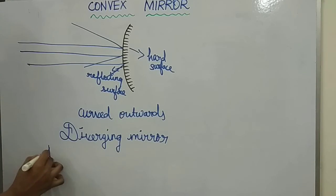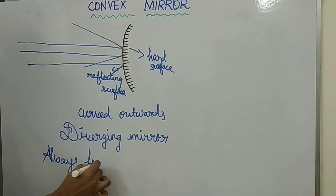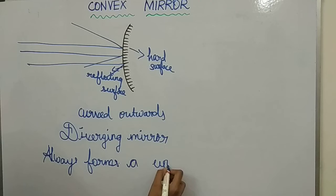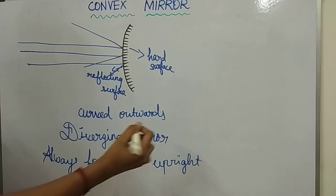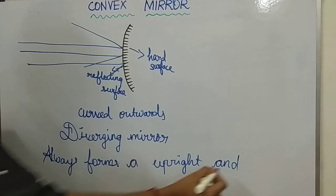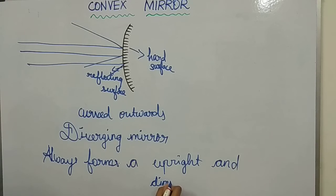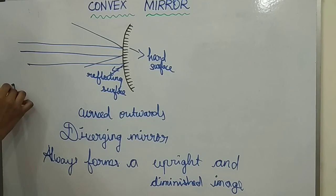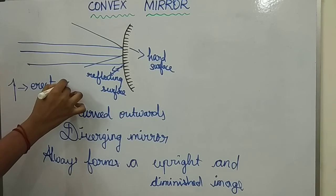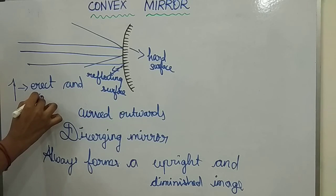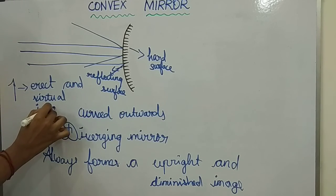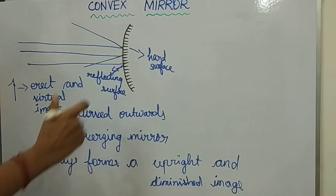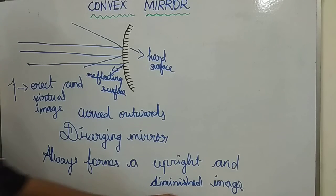It always forms an upright and diminished image. It forms an erect and virtual image. A virtual image is the image formed behind the mirror. Diminished means small.